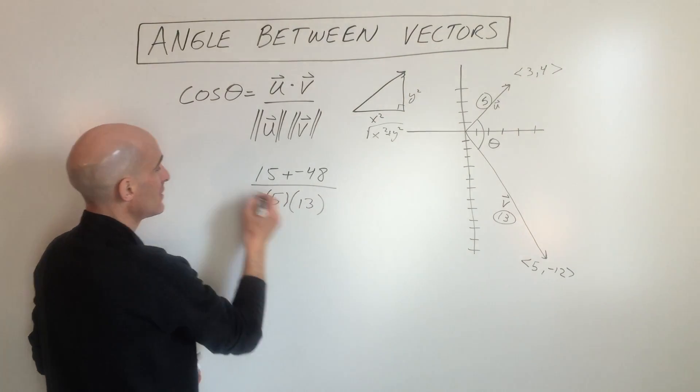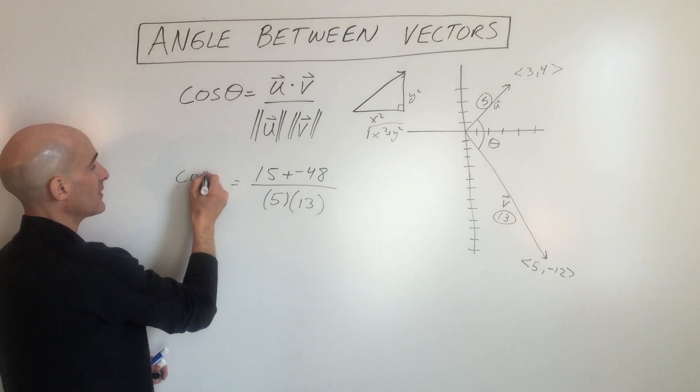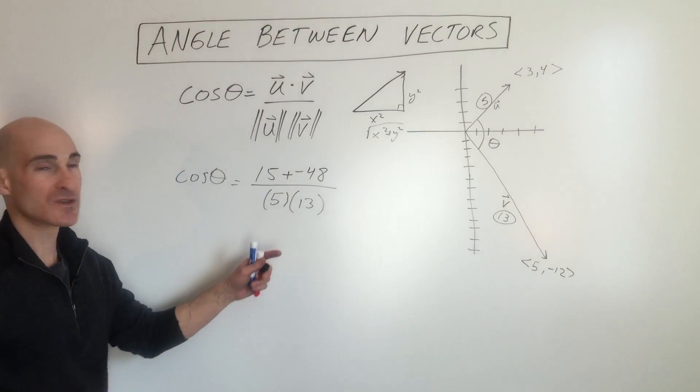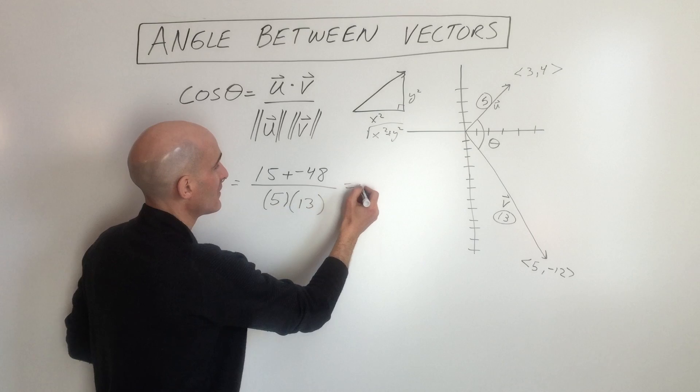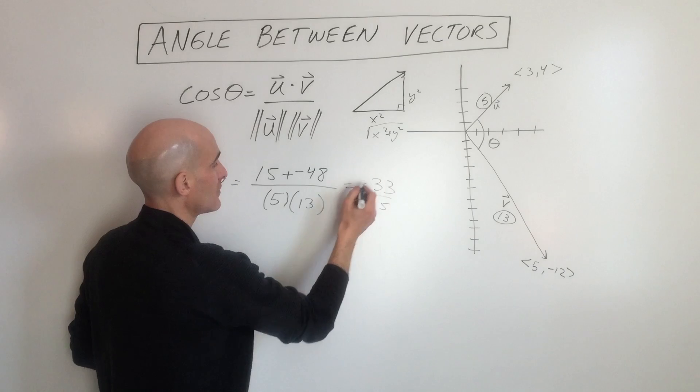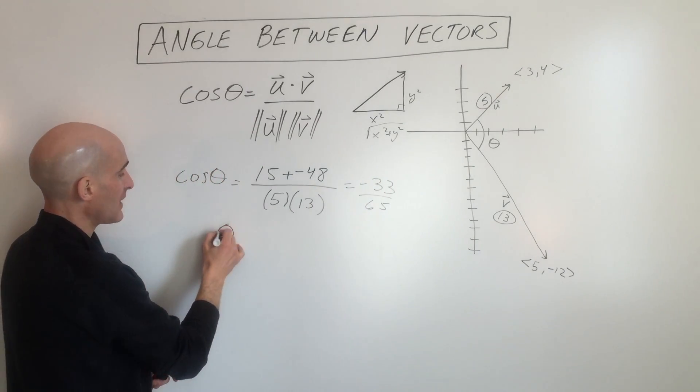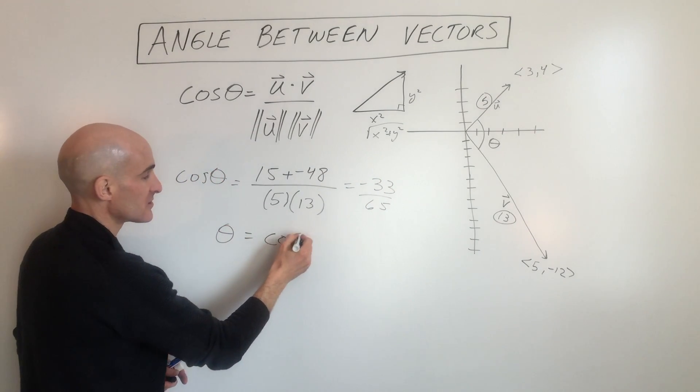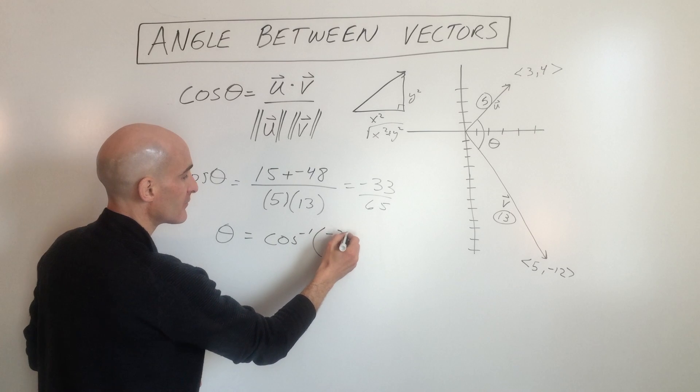This equals the cosine of theta. If we simplify that down we get negative 33 divided by 65. But then what we're going to do is to find theta, we're going to take the cosine inverse of negative 33.